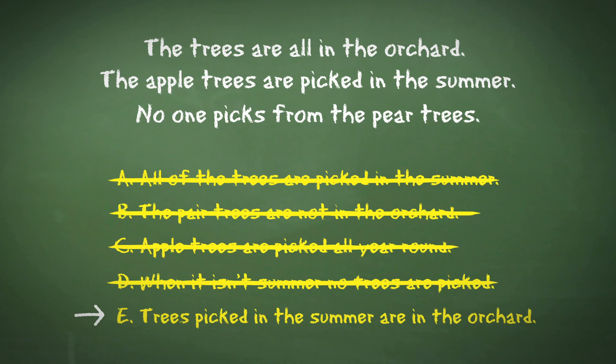We therefore move on to answer E. The trees picked in the summer are in the orchard. Now, if we look at the first statement, the trees are all in the orchard, we can see that this answer must be correct.